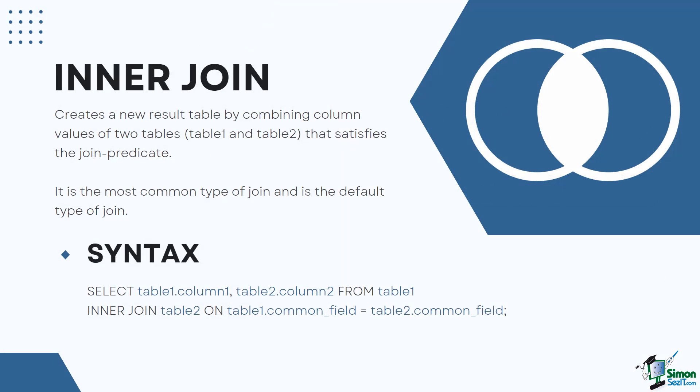Let's start with the basic joins first. The inner join creates a new result table by combining column values of two tables, table 1 and table 2, based upon the join predicate. The query compares each row of table 1 with each row of table 2 to find all pairs of rows which satisfy the join predicate. When the join predicate is satisfied, column values for each matched pair of rows are combined into a result row.